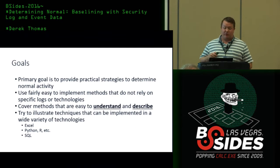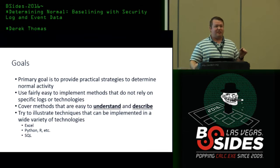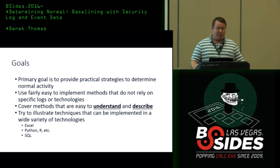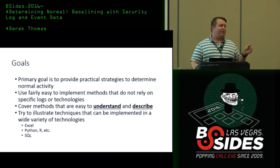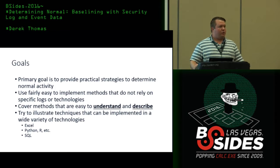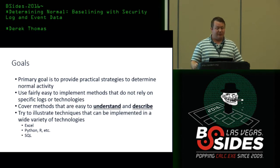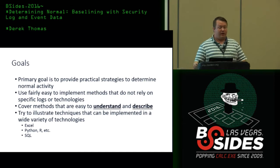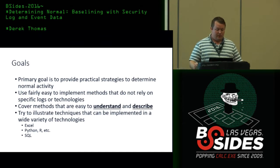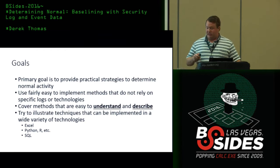I'm trying to provide practical strategies. If somebody implements this in Excel, I'm going to consider it a success. I do everything in R or SQL, but hopefully you can do it in anything you're familiar with. We're going to cover methods that are easy to understand and describe — you need to be able to explain this to stakeholders. There's some really cool stuff with deep learning, but describing that to clients is hard. Sometimes things are perceived as a black box, so this is one way to easily illustrate anomaly detection techniques.